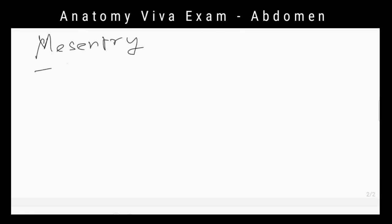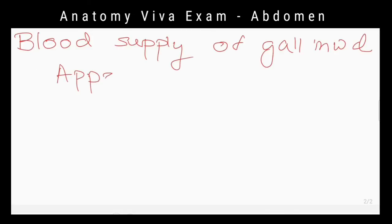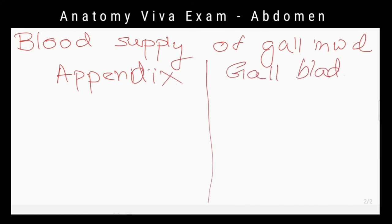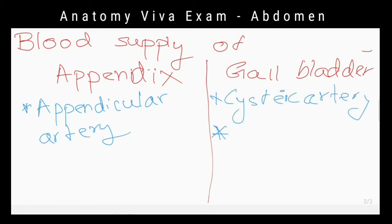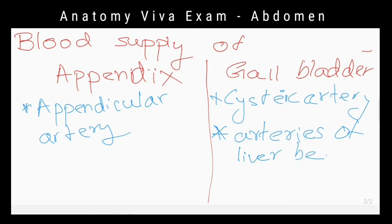What is the difference between blood supply to the gallbladder and blood supply to the appendix? The appendicular artery is the only arterial supply to the appendix, so the appendix becomes gangrenous when the appendicular artery is thrombosed. But gangrene of the gallbladder is rare, because even if the cystic artery becomes thrombosed, there is a secondary arterial supply coming from the liver bed.